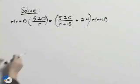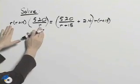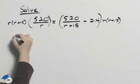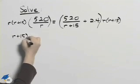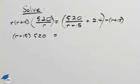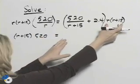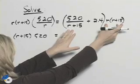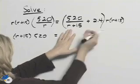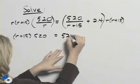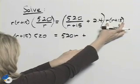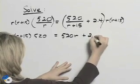Now, doing so allows us to cancel some terms. The R's here will divide out, so we'll be left with R plus 15 times 520 on the left-hand side. On the right, if we take R times R plus 15 times the first term, the R plus 15 will cancel. So we'll have 520 times R, and then we take the R times R plus 15 times the 2.4.